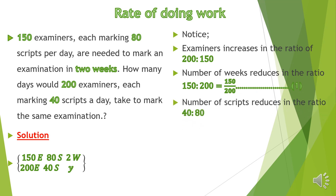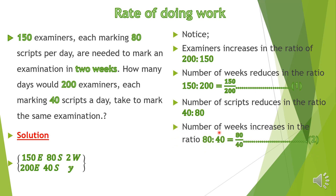Similarly, the number of scripts marked per day per examiner is reducing from 80 to 40. The number of scripts reduces in the ratio 40 to 80. If scripts are reducing, you expect the number of weeks to increase — the fewer scripts you mark, the more time you take. Therefore, weeks increase in the ratio 80 to 40, written as 80 over 40. Let's call this equation two.